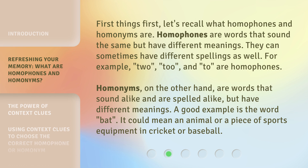First things first, let's recall what homophones and homonyms are. Homophones are words that sound the same but have different meanings. They can sometimes have different spellings as well. For example, 'two,' 'to,' and 'too' are homophones.